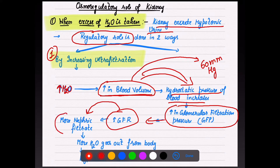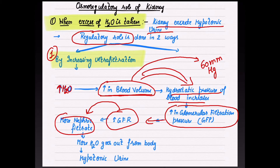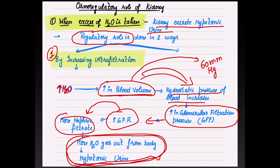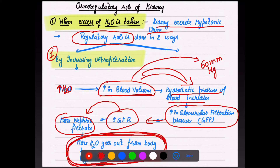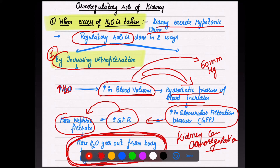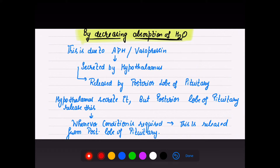More nephric filtrate means more water will reach the PCT, DCT, ascending and descending limbs, so more water goes out from the body. When water is more in the urine, that condition is known as hypotonic urine. By excreting hypotonic urine, kidneys maintain osmoregulation by increasing ultrafiltration. The second way is by decreasing absorption of water.